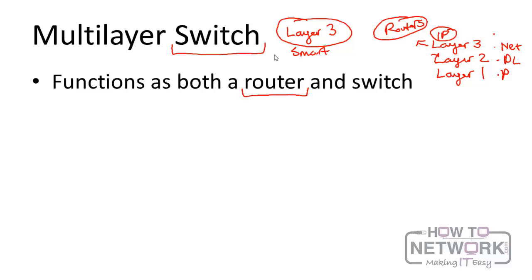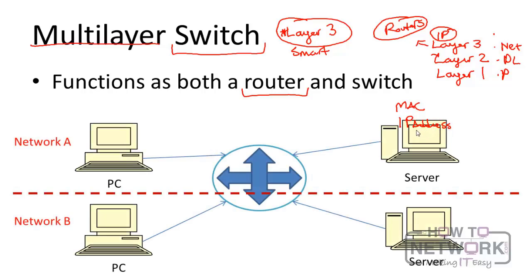So a switch can not only look at the MAC address, but a multi-layer switch, one that operates not only in layer two but also on layer three, can also look at IP addresses.